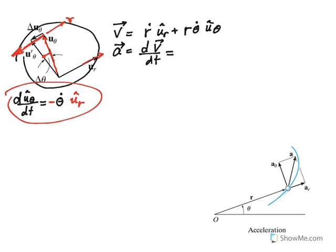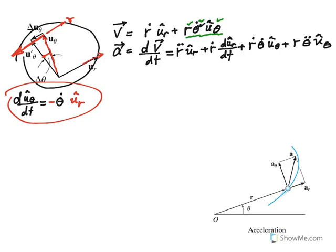Acceleration is the derivative of velocity. Velocity is R-dot U_R plus R theta-dot U_theta, and we have to apply the product rule carefully. The derivative of the first term gives R-double-dot times U_R, plus R-dot times the derivative of U_R, which is theta-dot U_theta. For the second term, we apply product rule to three factors: derivative of R gives R-dot; derivative of theta-dot gives theta-double-dot; and derivative of U_theta gives minus theta-dot U_R.